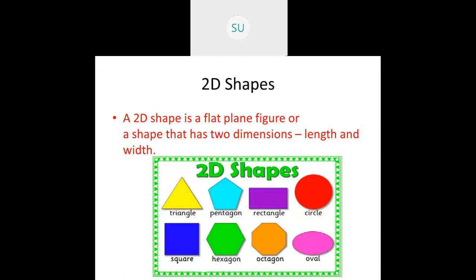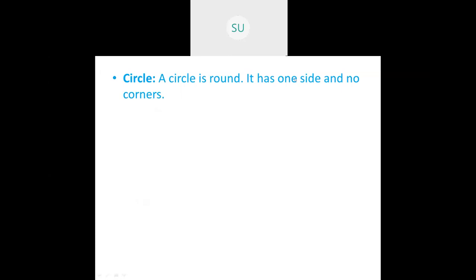There are many 2D shapes. A triangle has three sides. A pentagon has five sides. A rectangle has four sides. A circle is always round with one curved surface. A square has four sides. A hexagon has six sides. An octagon has eight sides. An oval is a curved shape — an egg is an example of an oval.